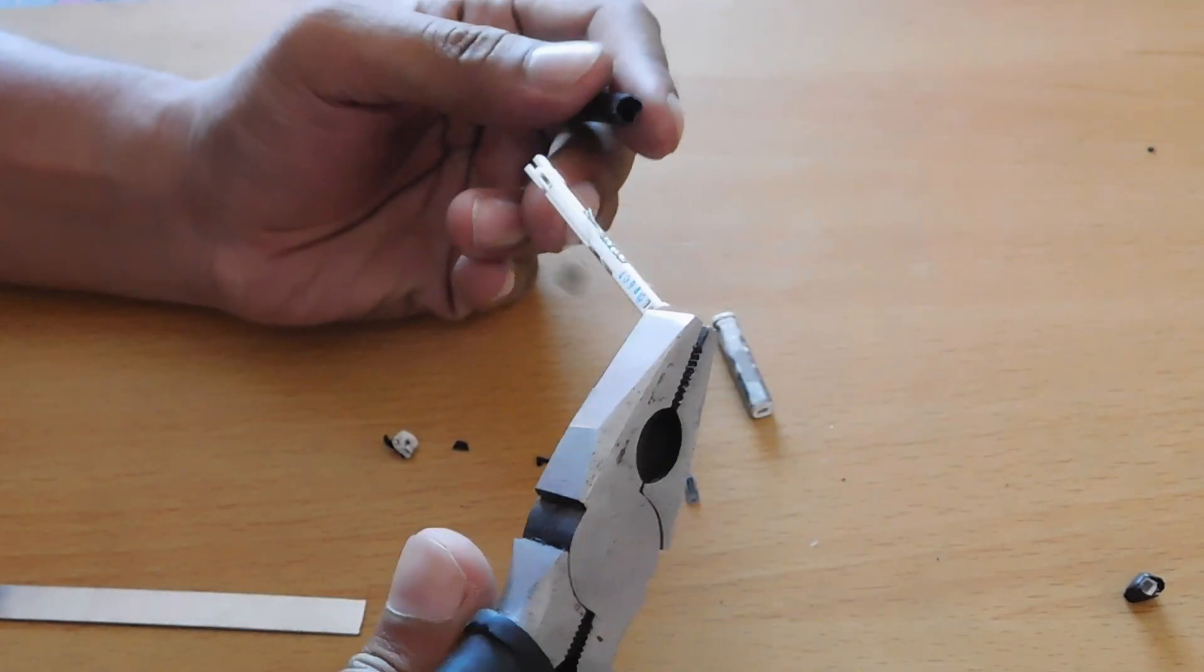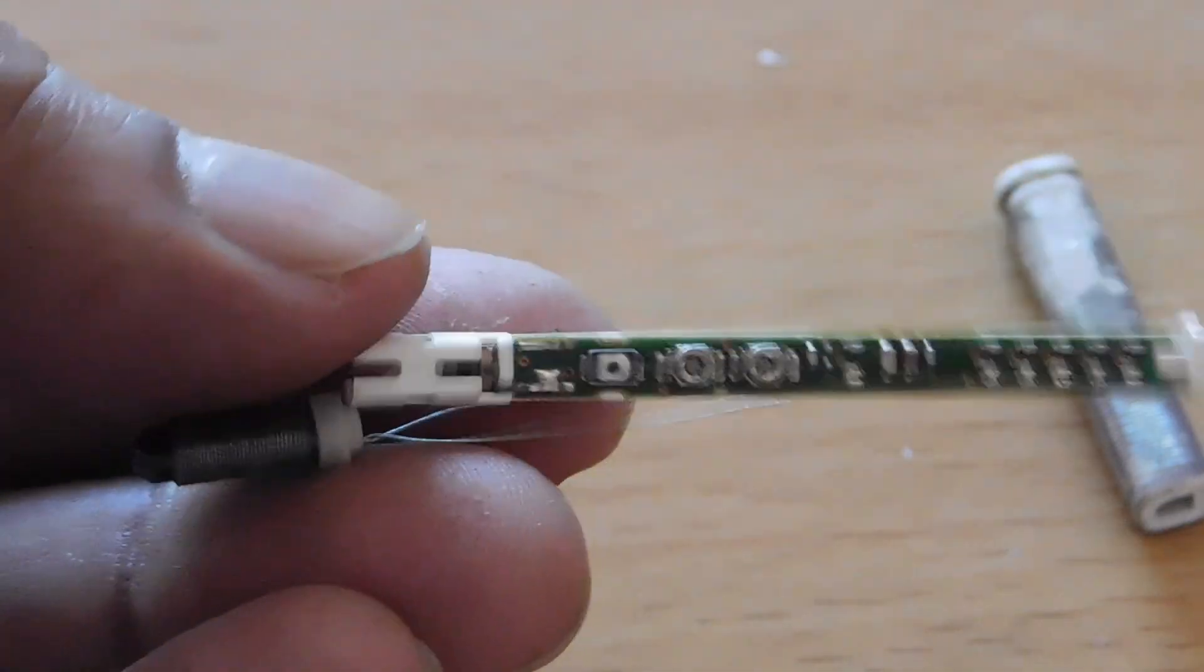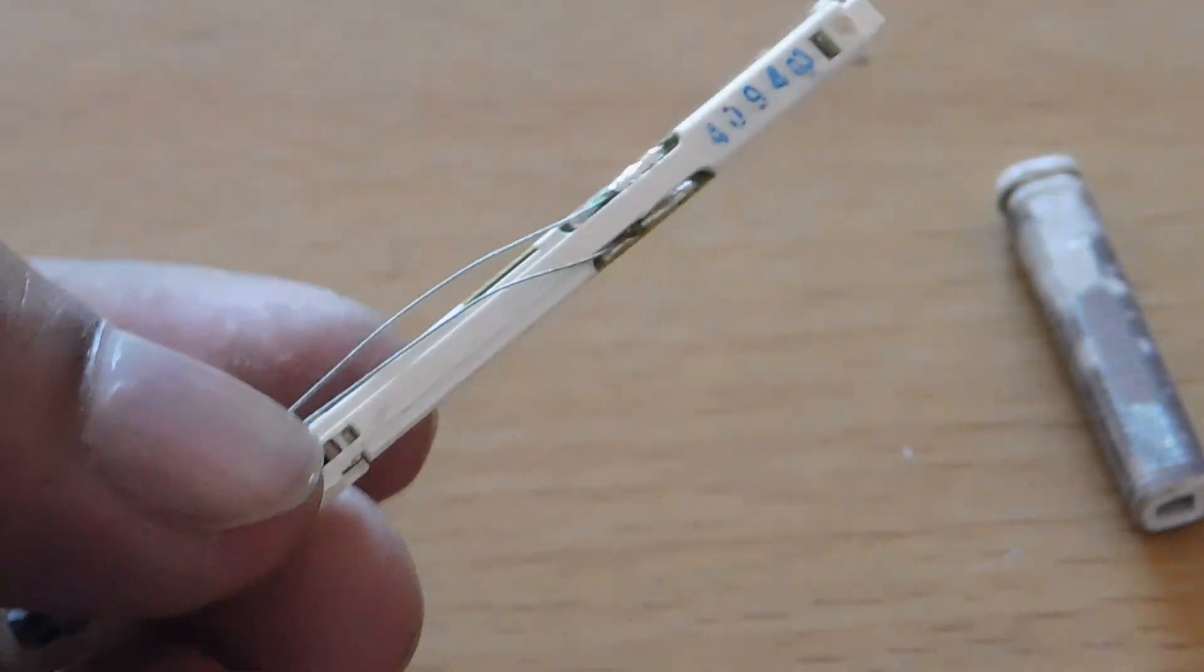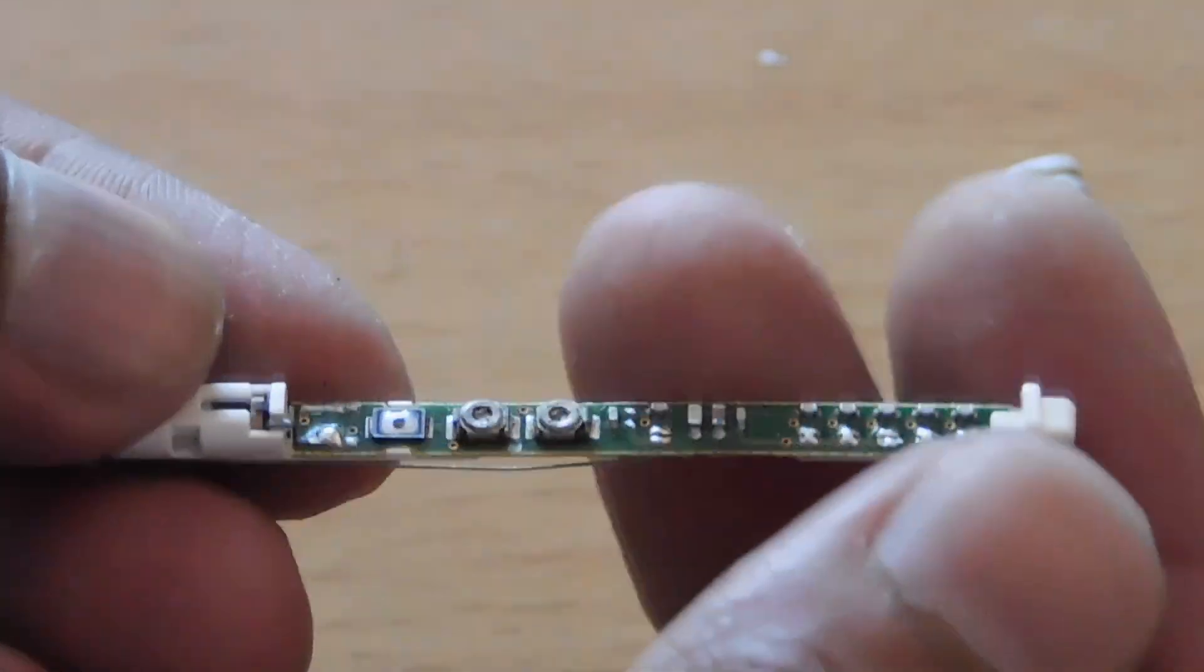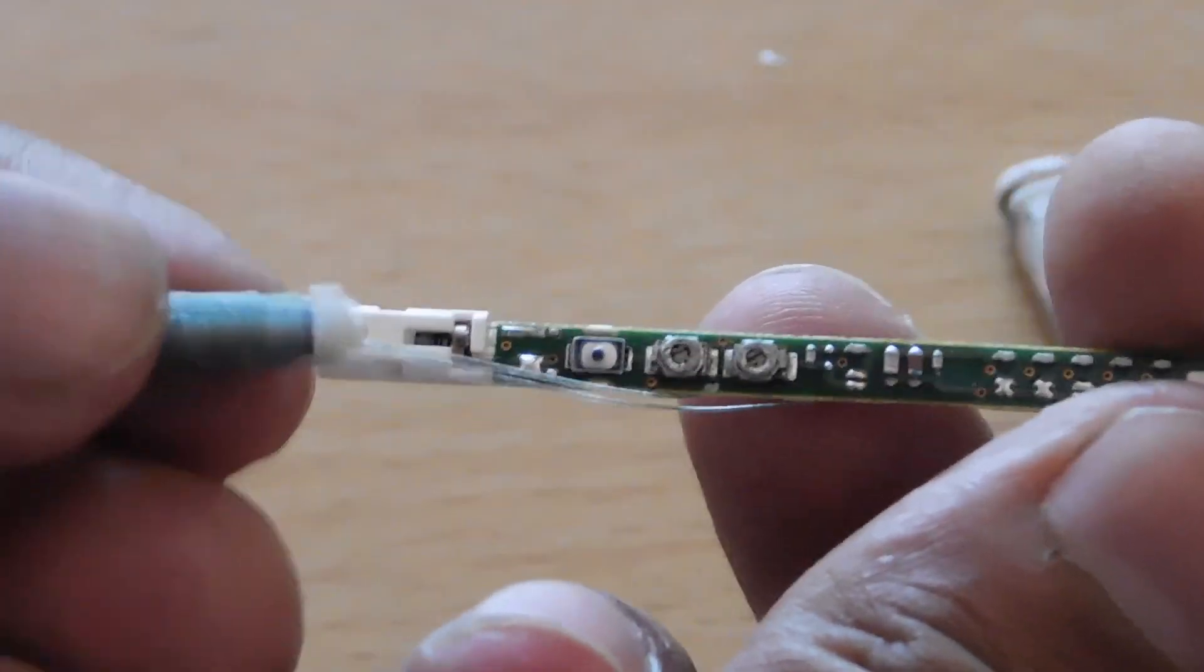You also get a button on this S Pen through which you can send commands to your phone. The interesting part is you don't have any power source inside the S Pen. Now the question is, how does S Pen get the power to work?